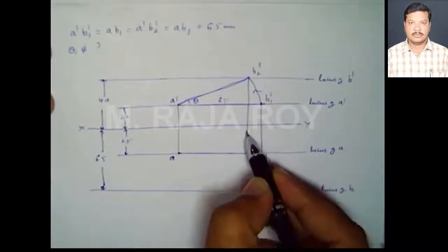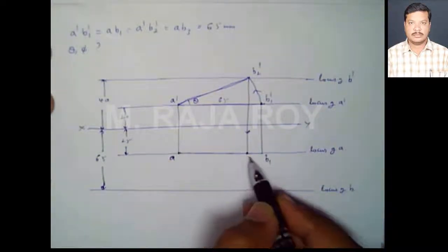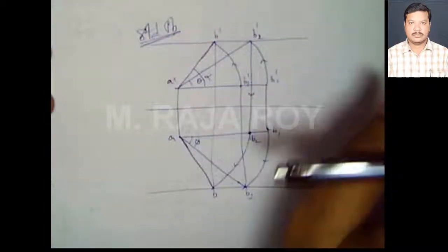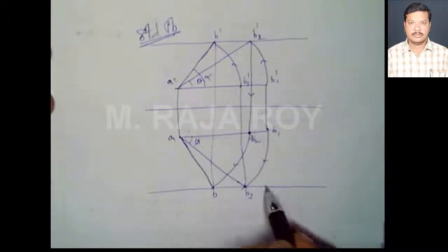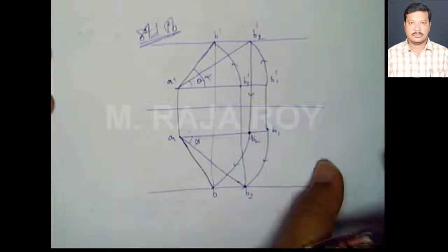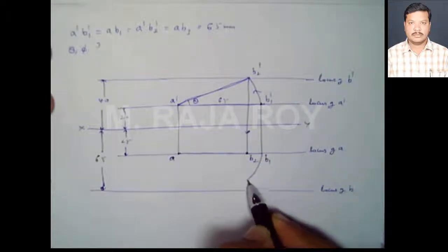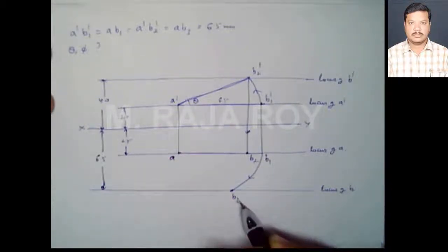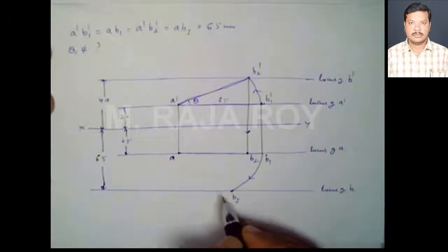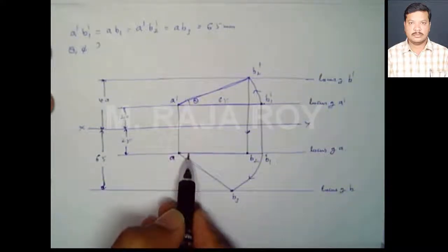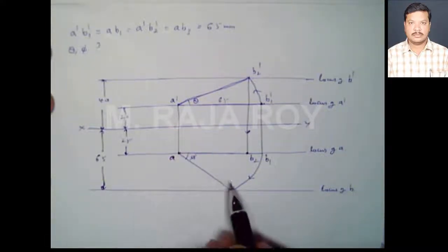If you draw a projector from B2' to the initial top view, you will get AB1. Now again observing the standard problem: if you rotate AB1 until it intersects with the locus of b line, you are going to get B3. You rotate it until it intersects with the locus line, and then automatically you will get B3. AB3 is again representing the true length of 65mm, and this angle will be phi.